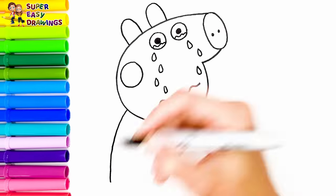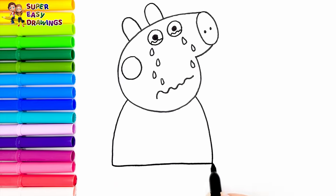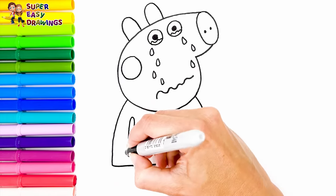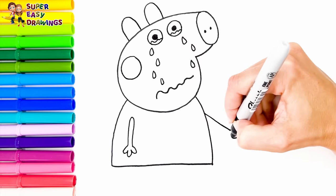Now let's draw her body. I draw her arms this way. She will hold Susie's hand.